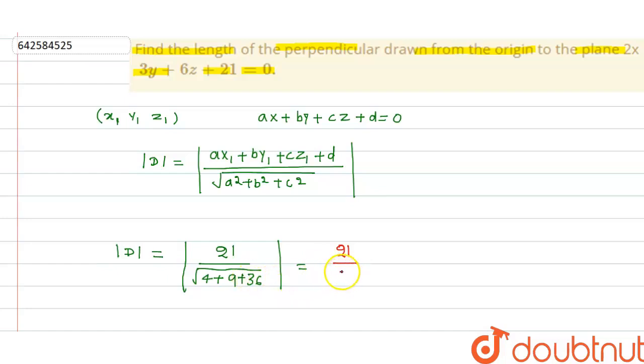That is equal to 7, so this will be 3. So the distance from the origin to the plane is 3.